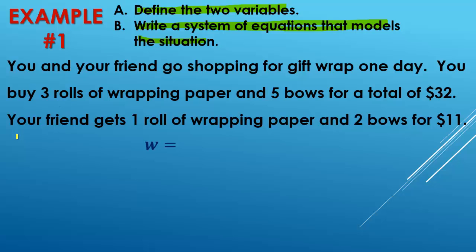So let's define wrapping paper as w and bows as b. So basically, you're looking for something that appears twice. So, wrapping paper here, wrapping paper there. We know that that needs to be one variable. And then we have bows and we have bows. So that needs to be another variable.